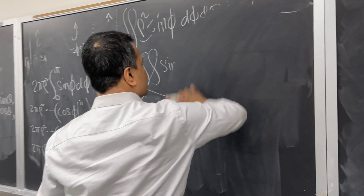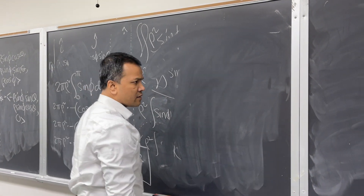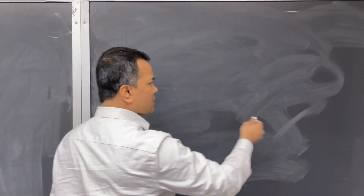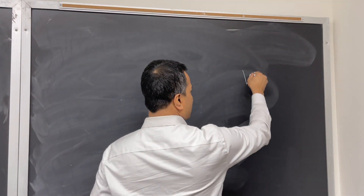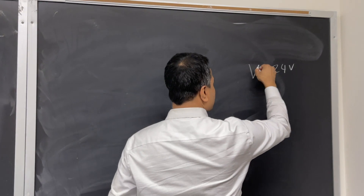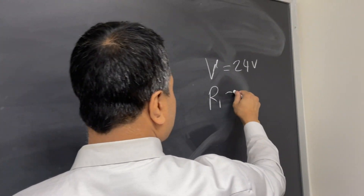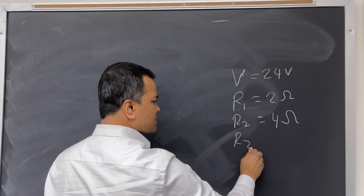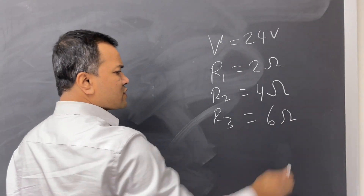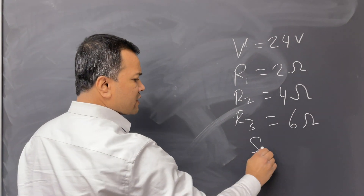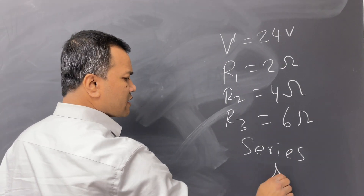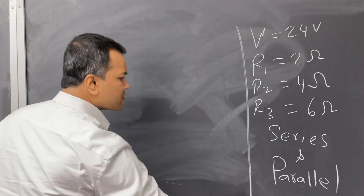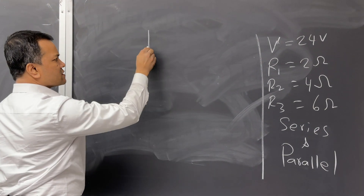Let's start from here and I'll make more space as needed. I have a voltage of 24 volts, resistor 1 is 2 ohms, resistor 2 is 4 ohms, and resistor 3 is 6 ohms. My goal is to build both a series and a parallel circuit. Let's start with the series circuit.